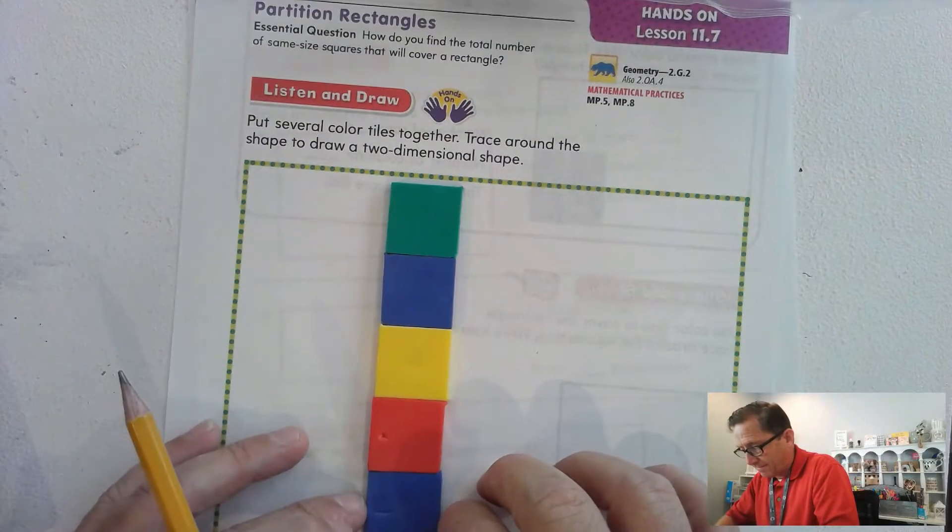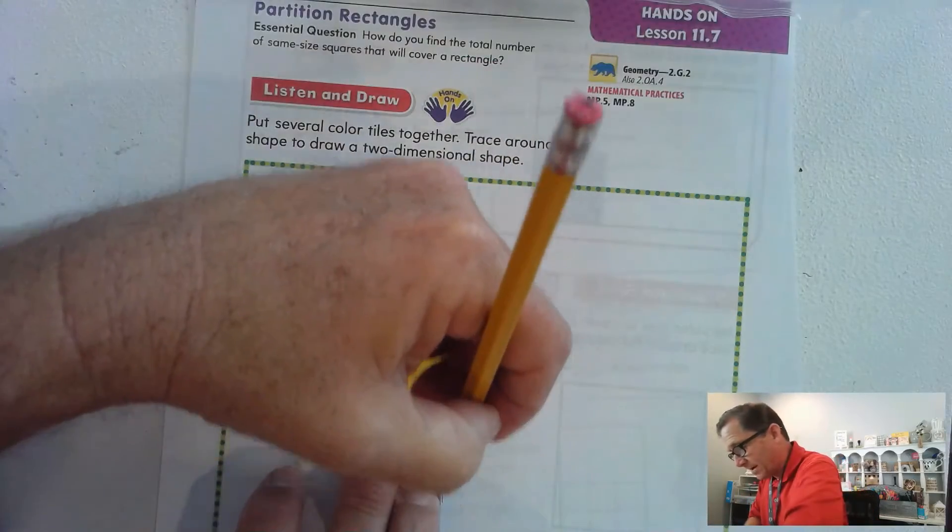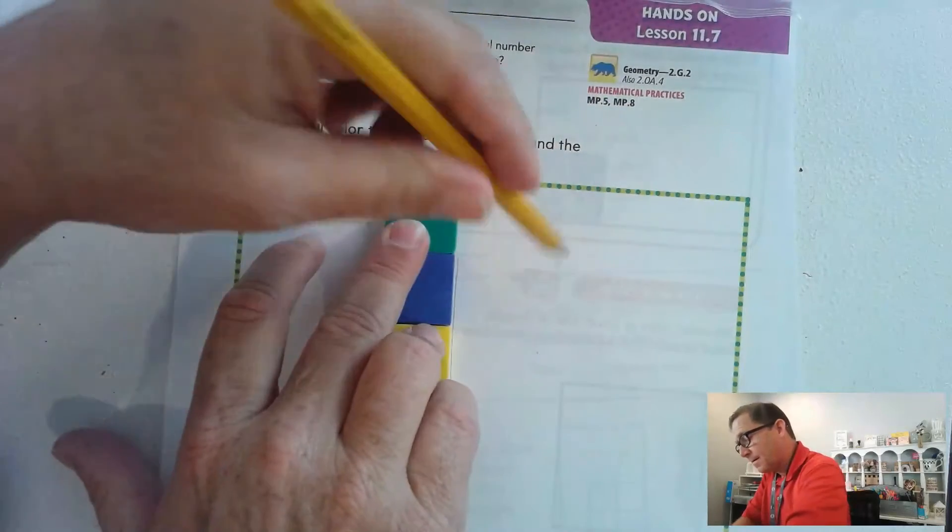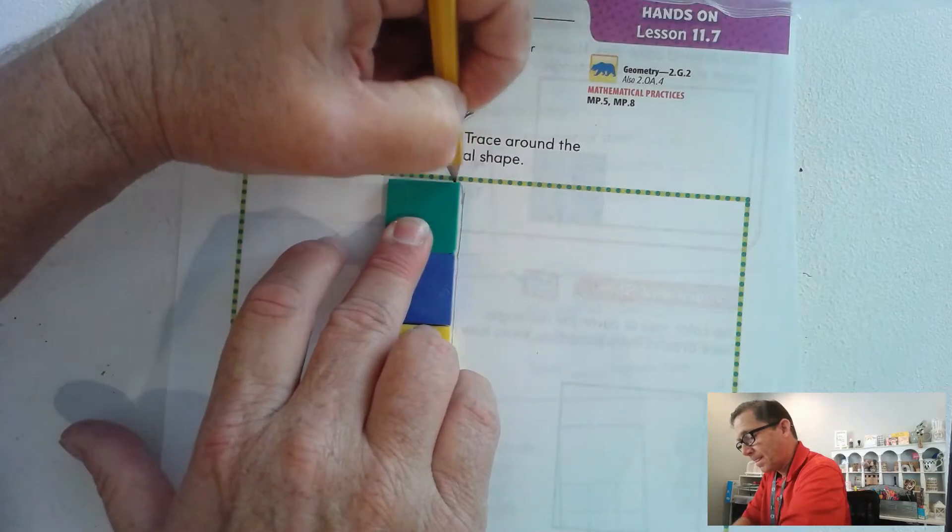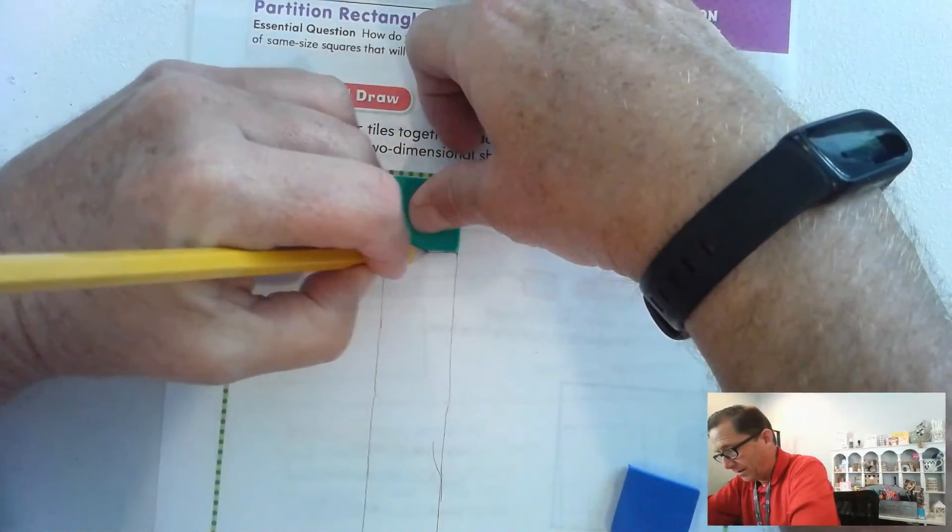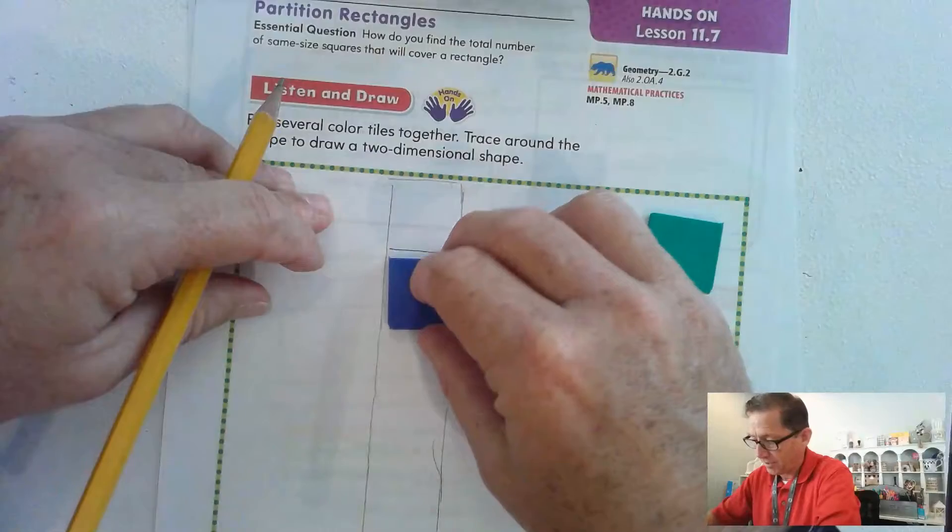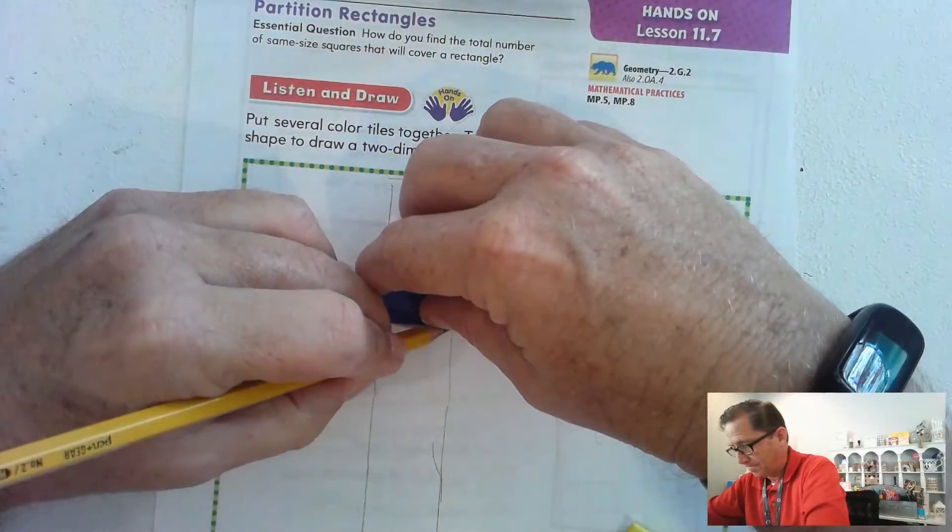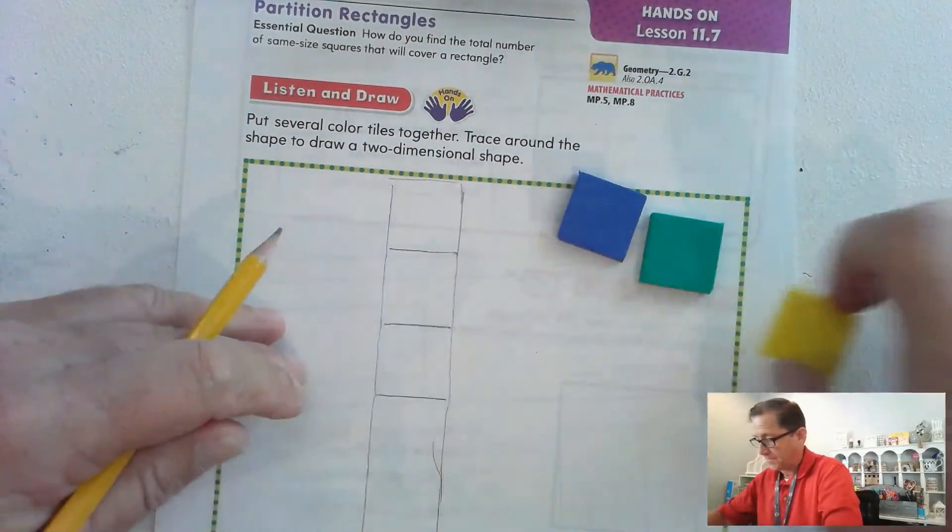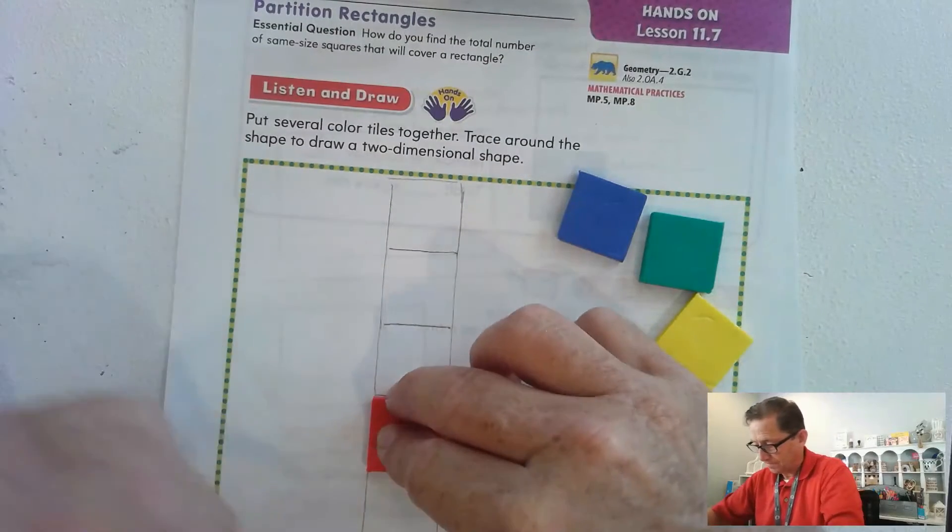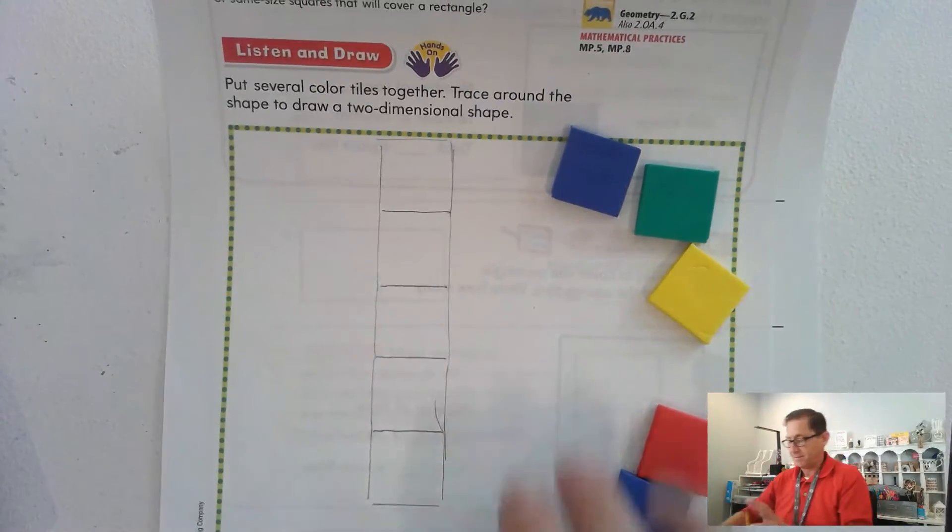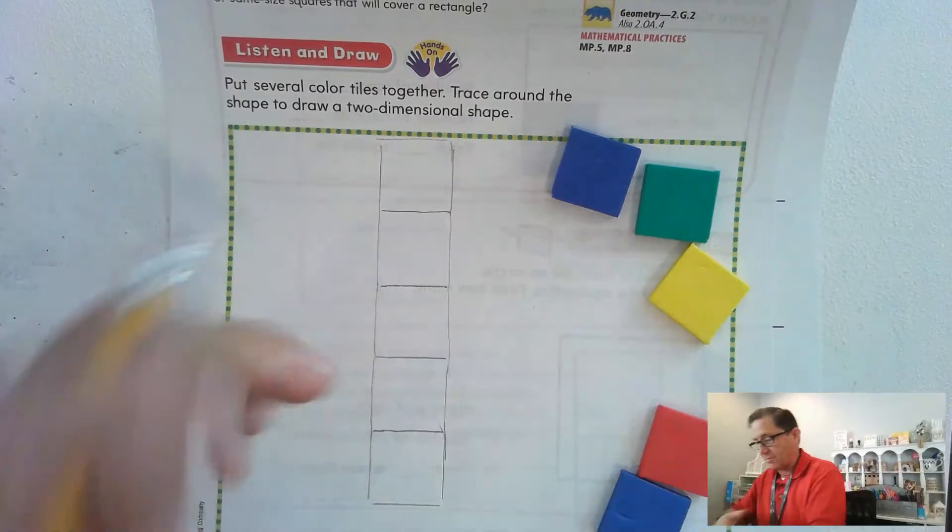It's a little hard. If you have trouble with this, have a partner help you hold the tiles down as you trace around. And then you can trace each individual square so we just see how many color tiles you used to make your shape. So that's my shape. So I have five colored tiles and I was able to make a rectangle out of it.